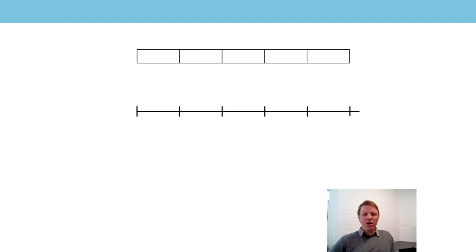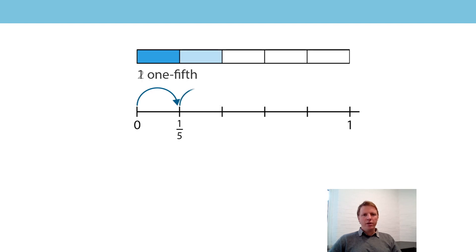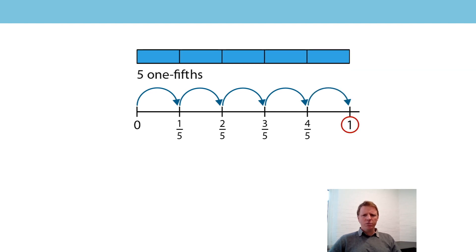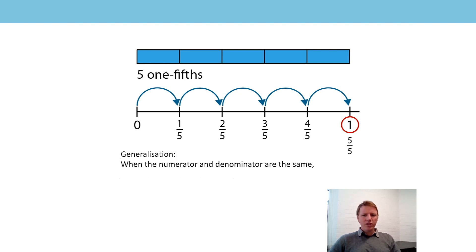Let's look at that in one more way. I've got the same number line and bar model, with zero at the beginning and one at the end. Let's count up in fifths together: zero, one one-fifth, two one-fifths, three one-fifths, four one-fifths, five one-fifths. But look at the number line — I've written one, not five one-fifths. They go at exactly the same point, so they are equivalent to each other. When the numerator and denominator are the same, the fraction has a value of one.